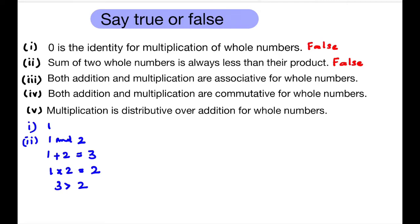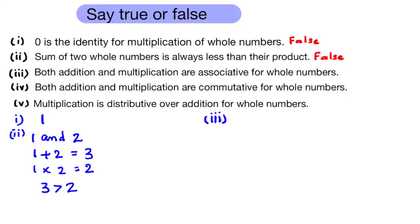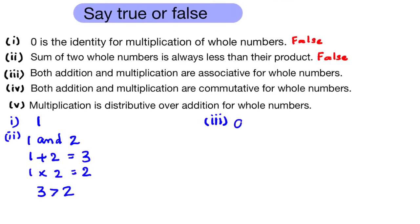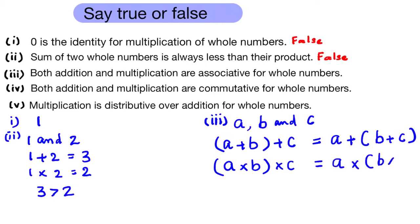Third question: Both addition and multiplication are associative for whole numbers. For any three whole numbers a, b, and c: (a + b) + c = a + (b + c), and (a × b) × c = a × (b × c).